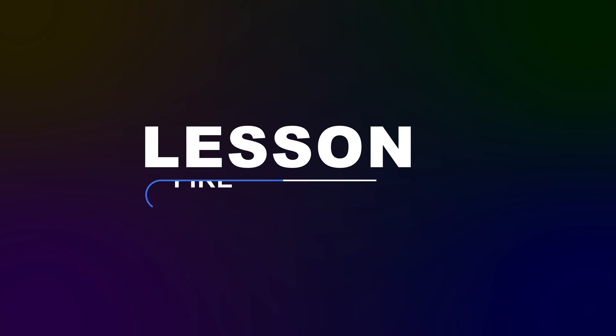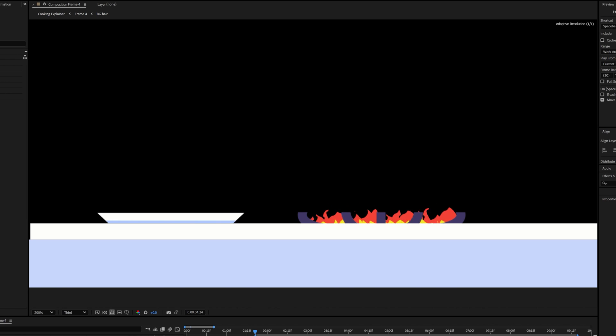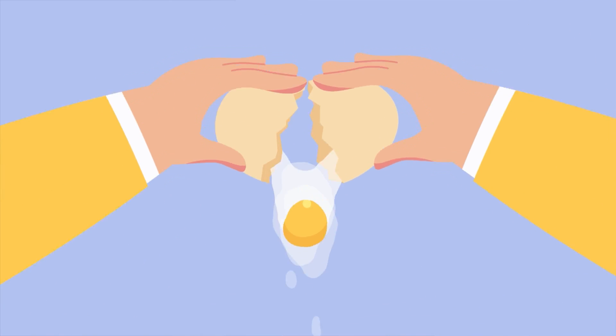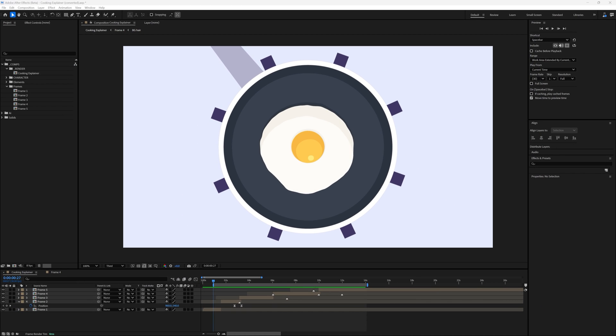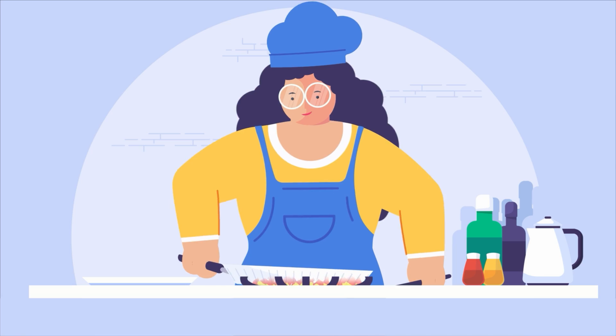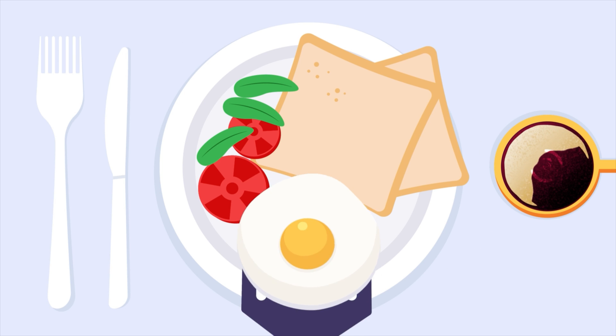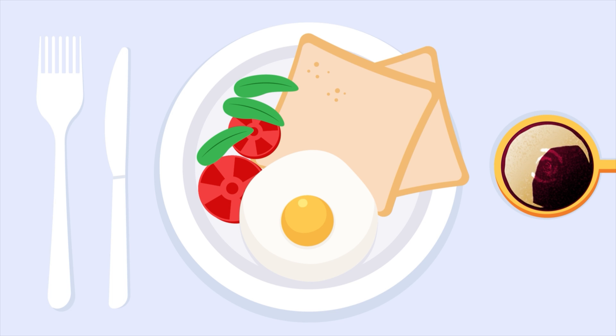In Lesson 7 we will learn how to animate fire. In the final lesson we will learn how to transition using match cuts. Match cuts are a very effective way to transition between scenes, but if not implemented correctly they can ruin your animation. We'll learn the correct way to use match cuts so that the transitions and the frames before and after everything looks intact and feels like part of the same video.